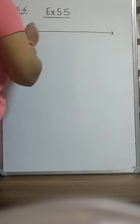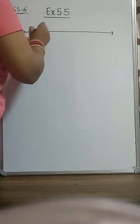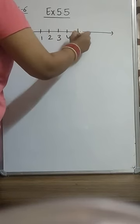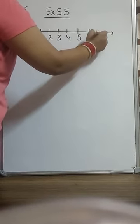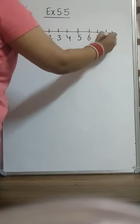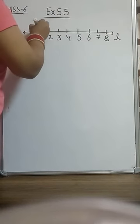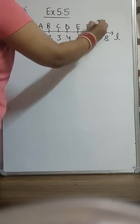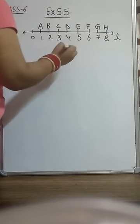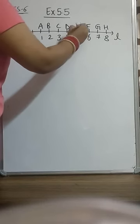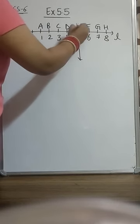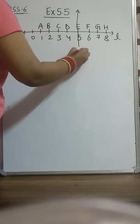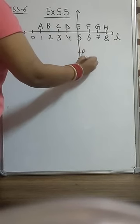There is a figure with a number line showing points 0 through 8. This is line L, with points A, B, C, D, E, F, G, H marked on it. From point 5, a line is passing through, and this is point P. This is line L and line M.